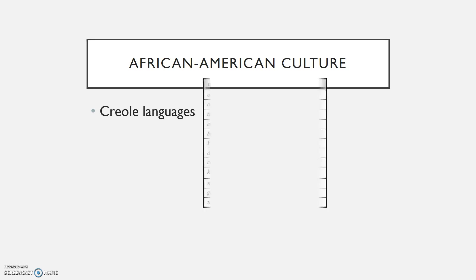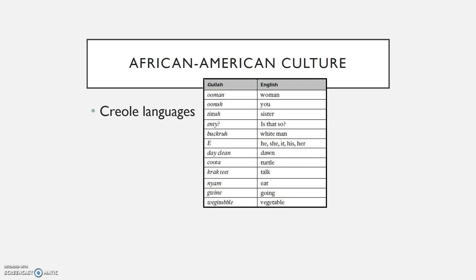Examples of Creole languages include Gullah in South Carolina — you can see the Gullah versus the English version, and for some words there might be a phonetic similarity, like 'woman' and 'woman,' whereas others might be completely different, with more West African traditions to them. Gullah was a mix of African and English, and Haitian Creole was a mixture of African and French. So there's not just one brand of Creole — it depended on the European language of the slavemasters.